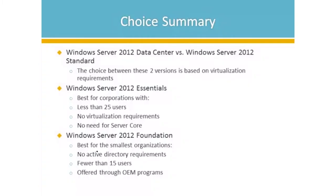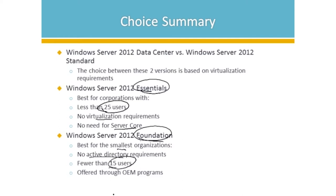To be clear: Essentials is for fewer than 25 users — you can't virtualize or run Server Core. For Foundation, you're in the smallest organizations, not running Active Directory, just a handful of users sharing files. Foundation is typically obtained through OEM programs, bundled shrink-wrapped with a small server from the original equipment manufacturer.